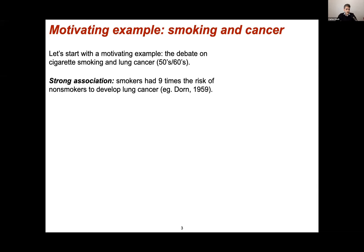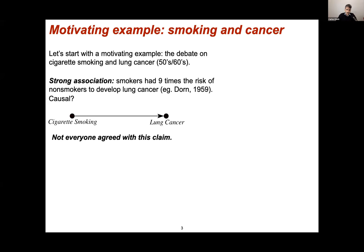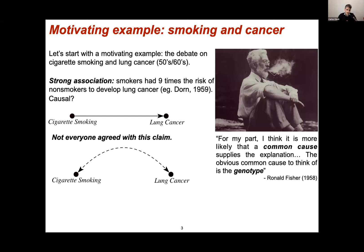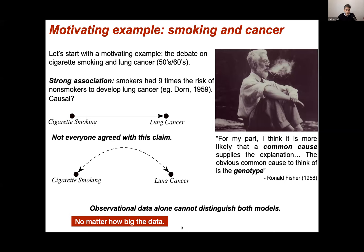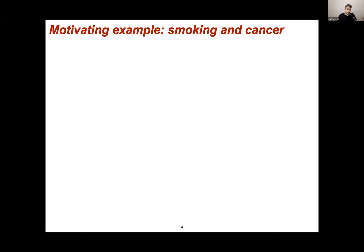Back then, observational studies found a strong association between smoking and cancer — smokers had nine times the risk of non-smokers of developing lung cancer. This naturally raised the question: is this association causal? One of its most fierce opponents was Sir Ronald Fisher, who argued that we could not rule out an unobserved common cause explaining the observed association. Theoretically, Fisher is right because observational data alone cannot distinguish between competing causal models, regardless of how big the data or how deep the neural network.